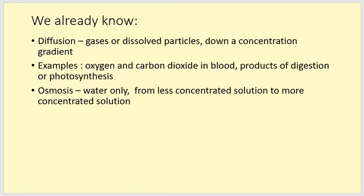What we already know is all about diffusion and osmosis. Diffusion involves movement of gases or dissolved particles down a concentration gradient. There's a couple of examples given on the slide here: oxygen and carbon dioxide in blood, and the products of digestion or photosynthesis in plants and animals.